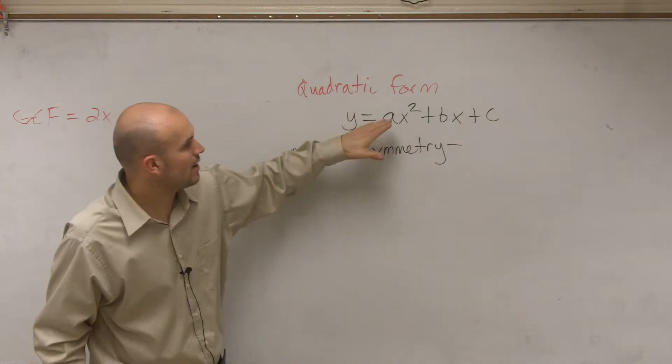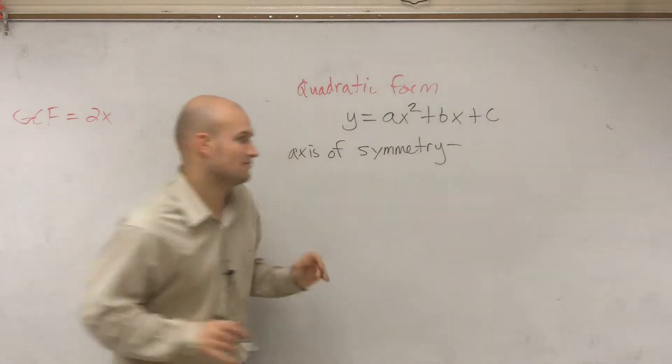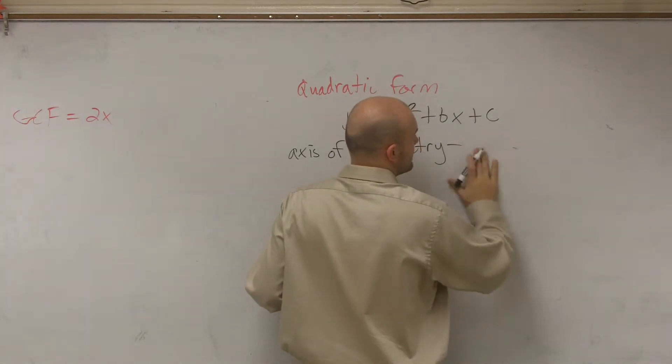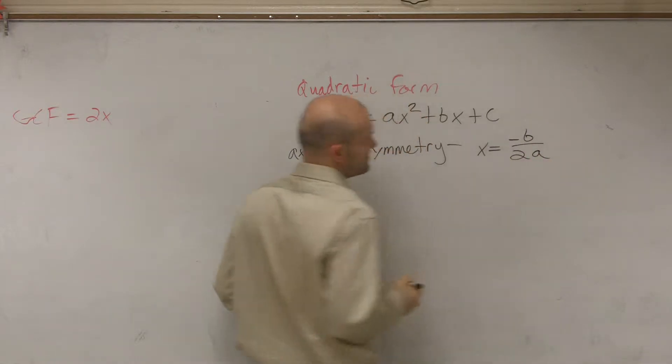So when we have a quadratic form of y equals ax squared plus bx plus c, the axis of symmetry is this formula: x equals opposite of b divided by 2 times a.